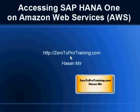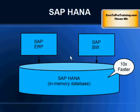Hello, in this session we will talk about accessing SAP HANA on Amazon Web Services, known as AWS. This is Hassan Mir from Zero2ProTraining.com. SAP HANA is a powerful in-memory database released by SAP, and it is the buzz of the day. It can be used by both online transaction processing systems as well as online analytical processing systems, and that is what makes this database unique.